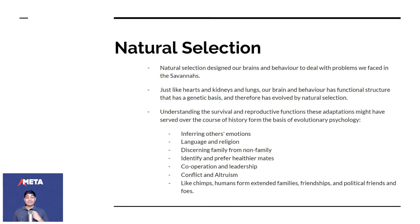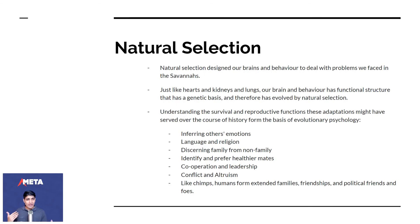Natural selection designed our brains and behavior to deal with problems we faced on the plains of the savannas. Just like hearts, kidneys, and lungs, our brain and behavior have a functional structure with a genetic basis that evolved by natural selection. Understanding these adaptations forms the basis of evolutionary psychology — covering how to infer emotions, the importance of language and religion, identifying healthier mates, cooperation, leadership, conflict, and altruism.